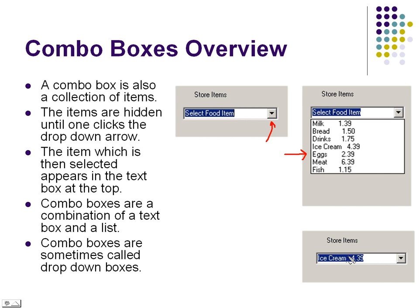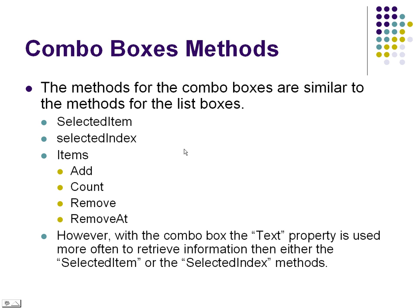When you clicked on an item, it would come up in this text area, and you could retrieve it from the text property of the particular combo box you were looking at.